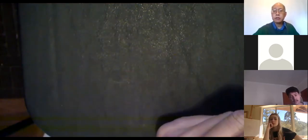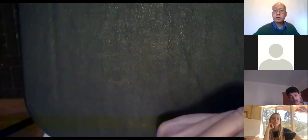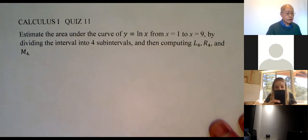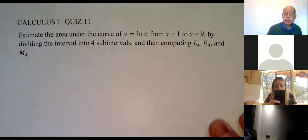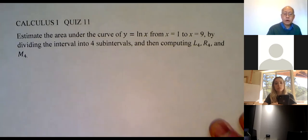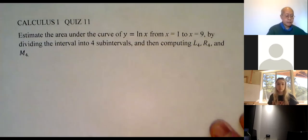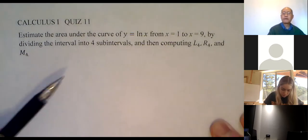Let me check the chat — nothing there. Any questions? Otherwise we'll go straight to the quiz, and that'll be it until next Monday. Quiz time: get your cell phones and cameras ready and I'll put you in your breakout rooms. The quiz is due Monday. Everybody have a nice Thanksgiving — no class Thursday, no class Friday. The problem: estimate the area under the curve y = ln(x) from x = 1 to x = 9 by dividing into four sub-intervals and computing L4, R4, and M4 — left endpoints, right endpoints, and midpoints.